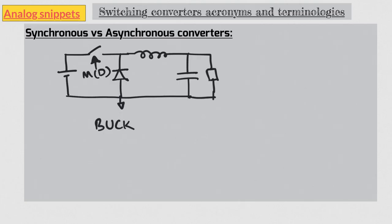Normally a switching converter is shown to contain a switch, a diode, an inductor and a capacitor, apart from an input voltage source and output load. The switch is often shown to be controlled by a PWM signal with a duty D. This is an example of an asynchronous converter.